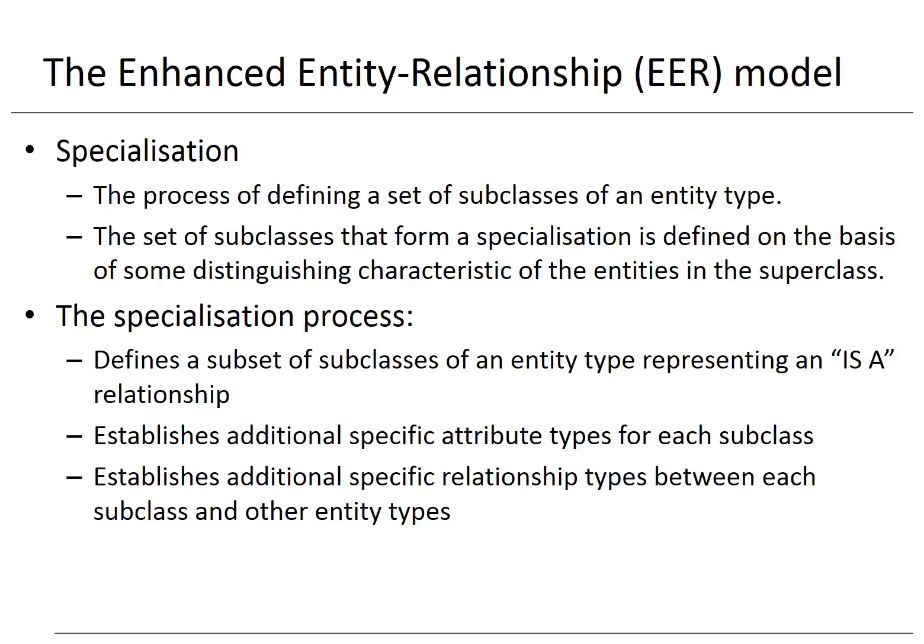The specialization can establish additional specific attribute types for each subclass. A student can have a master thesis attribute type. A professor can have an academic degree attribute type. During the specialization, it is also possible to establish additional specific relationship types between each subclass and other entity types. A student can register for courses, and a professor can teach courses.